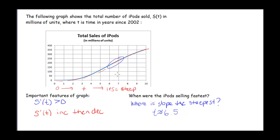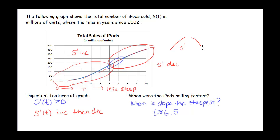Where the iPods were selling the fastest is where the slope is the steepest — that spot occurs where the second derivative is 0. In this area S prime is increasing, and over here S prime is decreasing. As S prime goes up then down, somewhere in the middle the slope of S prime is 0. The slope of S prime is that second derivative. So where your slope is the steepest — where iPods are selling the fastest — is where the second derivative is 0. The first region is acceleration; the second region is deceleration.